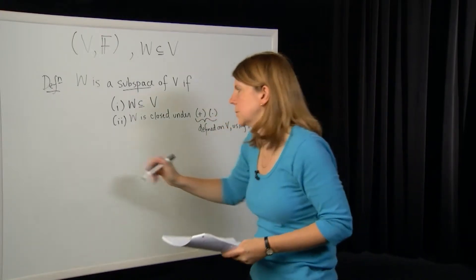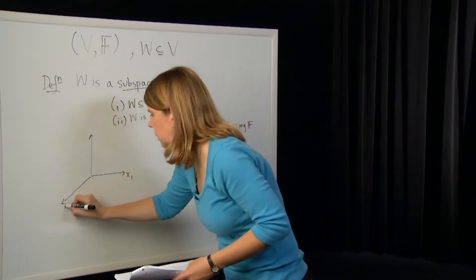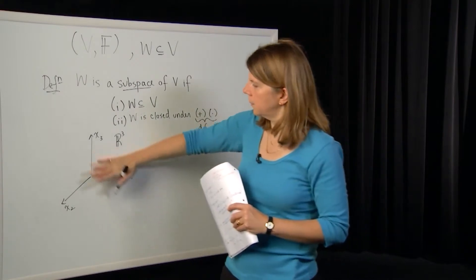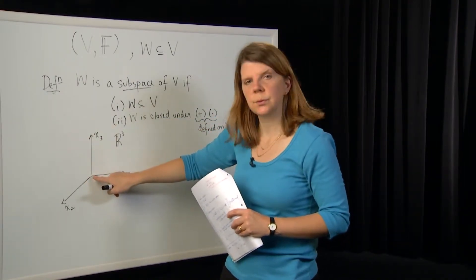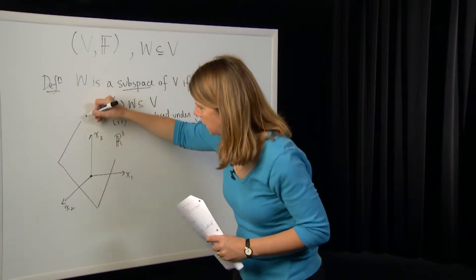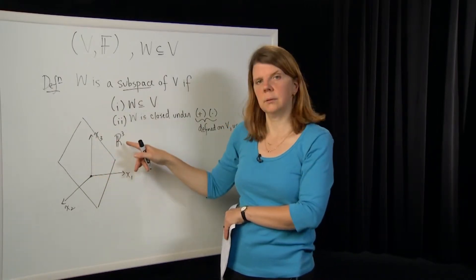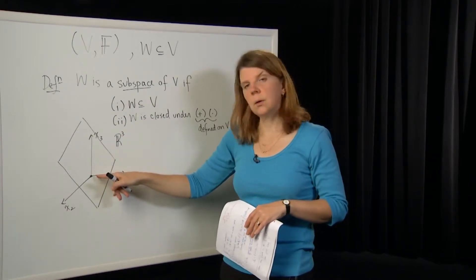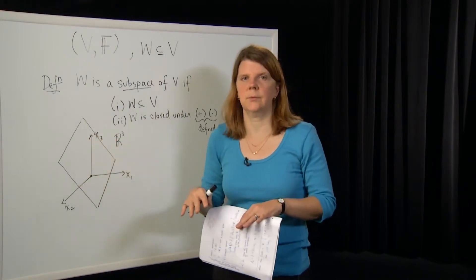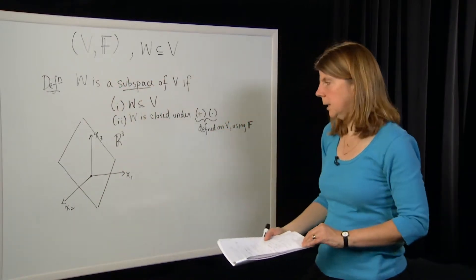Geometric interpretation: think about the space R3 with standard axes x1, x2, and x3. Any two-dimensional plane which goes through the origin — a plane that extends to infinity — is a subspace of R3. It's not the full R3, it's only a two-dimensional space. But if it goes through the origin, it's a subspace, because it needs a zero element, which it inherits from its parent space R3.